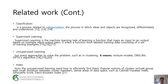Classification: Classification is a process related to the categorization of processes in which ideas and objects are recognized, differentiated, and understood. Supervised Learning: Supervised learning is a machine learning task of learning a function that maps an input to an output based on example input-output pairs. It infers a function from labeled training data consisting of a set of training examples.